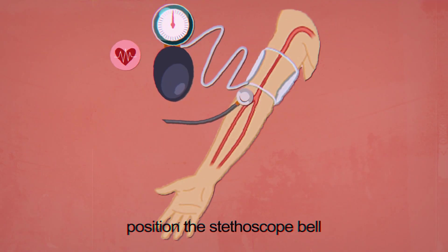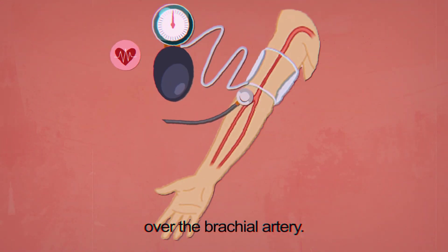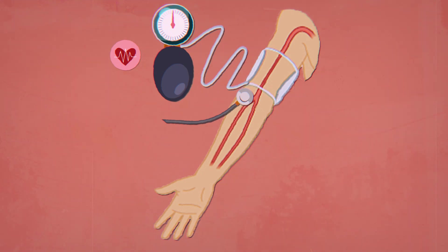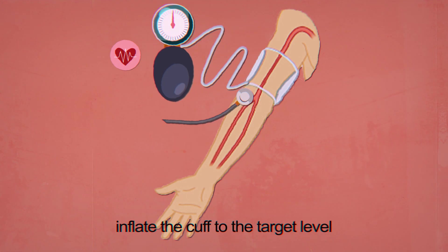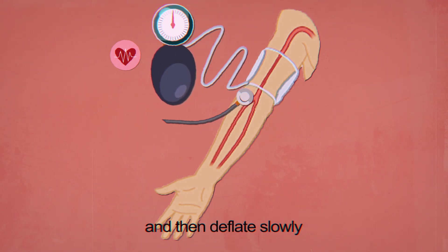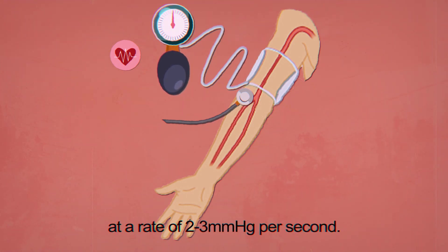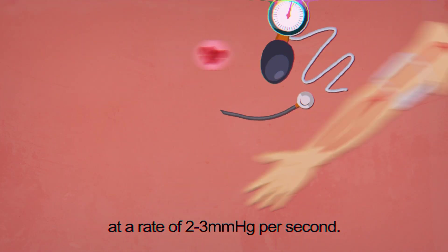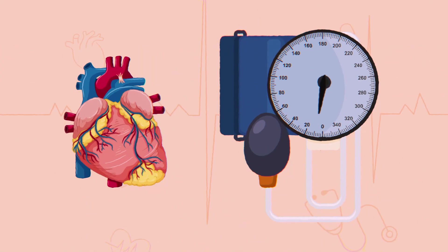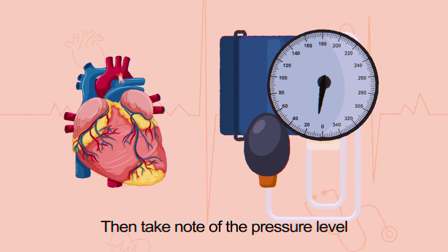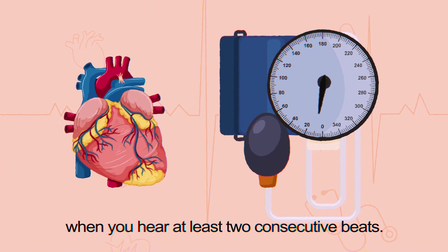Position the stethoscope bell over the brachial artery. In identifying the systolic pressure, inflate the cuff to the target level and then deflate slowly at a rate of 2–3 mmHg per second. Take note of the pressure level where you hear at least two consecutive beeps.